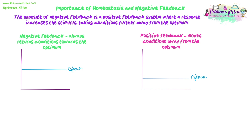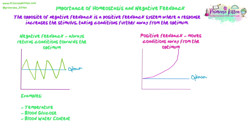The opposite of negative feedback is positive feedback, where a response increases the stimulus and takes conditions further away from the optimum. It's rarer in biology, especially in humans. Negative feedback always returns conditions towards the optimum — it moves away, comes back down, goes too low, comes back up, oscillating within an acceptable range. Positive feedback is very different: if something starts to move away from the optimum or normal level, it will keep going further and further away, almost exponentially. It deliberately moves conditions away from the optimum.